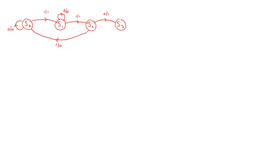For S2, with a zero as input we go to state S3 and output a one. With a one as input we go back to state S0 and output a zero. This is our Mealy graph, and what we want to do now is convert it into a Moore graph.